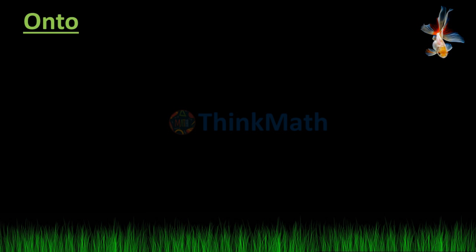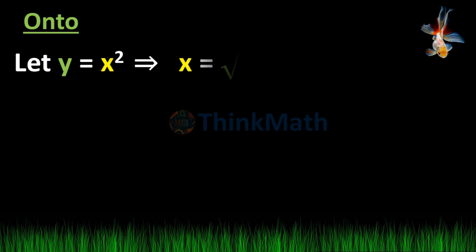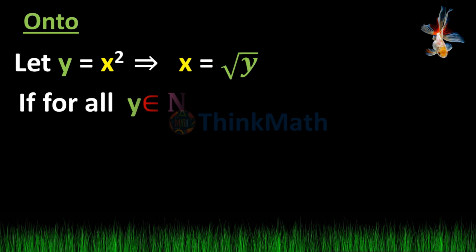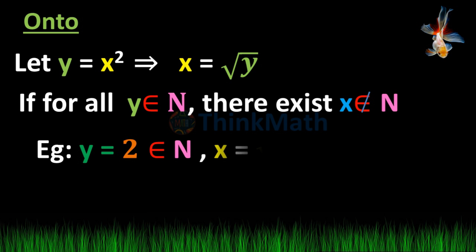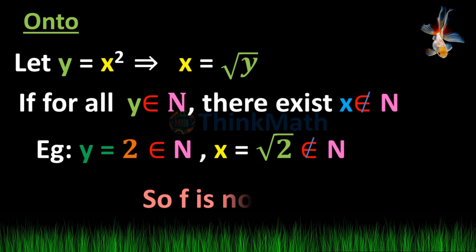Onto: Let y equal to x squared, which implies x equal to root y. For all y belonging to N, x equal to root y is not necessarily in N. For example, y equal to 2 belongs to N but x equal to root 2 is not in N. So f is not onto.